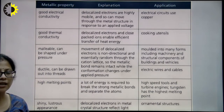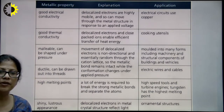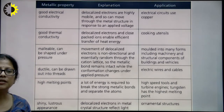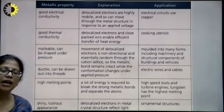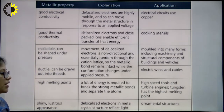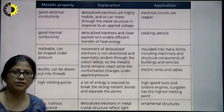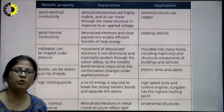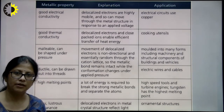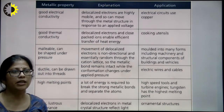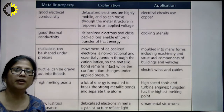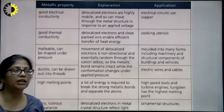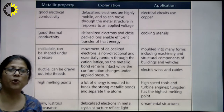Metals are shiny and lustrous in appearance because the delocalized electrons in the metal crystal structure reflect light. Therefore, they are used in ornamental structures. The free electron theory was very good qualitatively, but quantitatively, the results were very lower than expected. Therefore, the free electron theory was discarded.